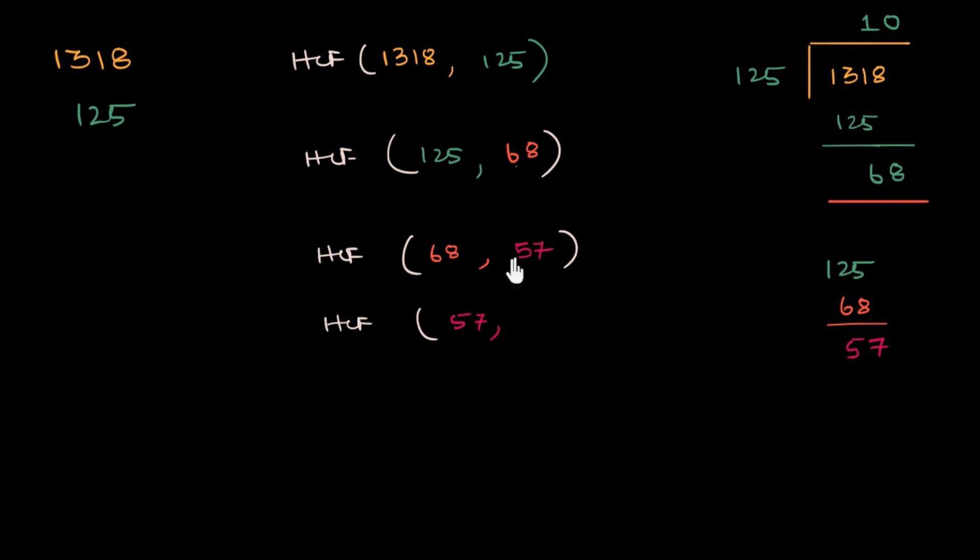The HCF of the smaller number and the remainder. In this case, the remainder is going to be direct. We don't have to do any subtraction. So it's 57 plus 10 is 67 plus 1 is 68. So 11. So which color do I use? Maybe this one. So 11.